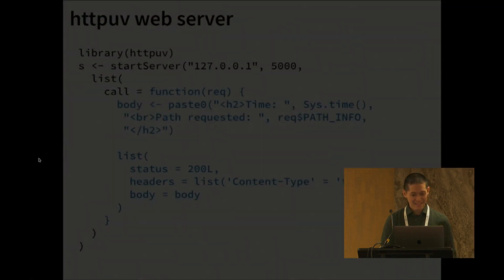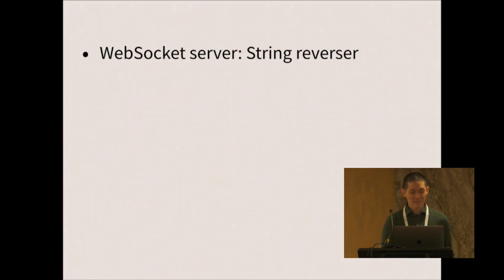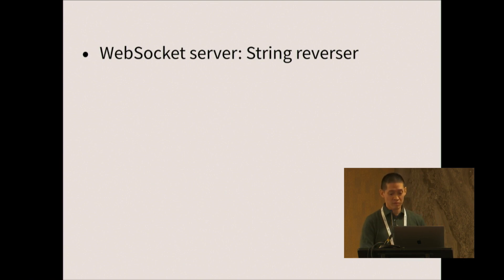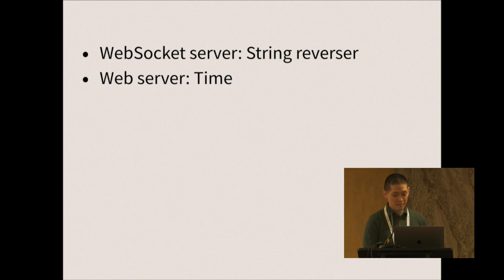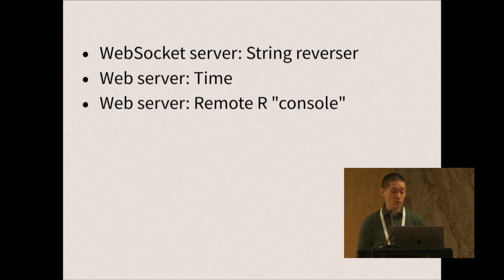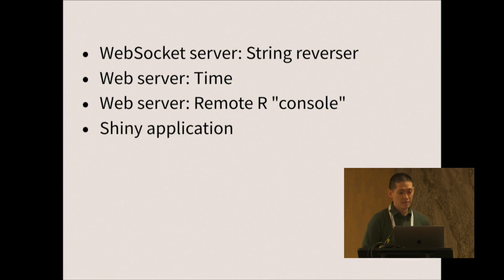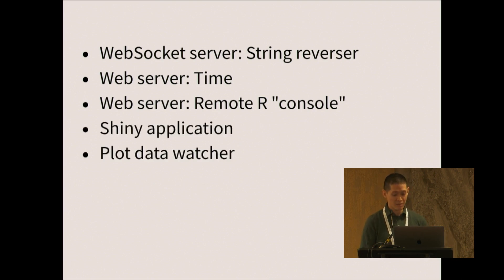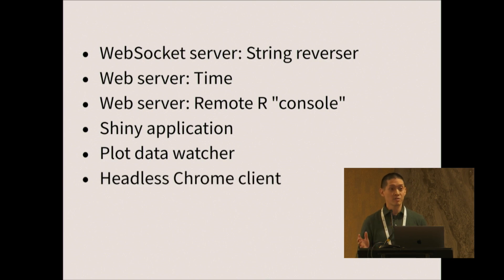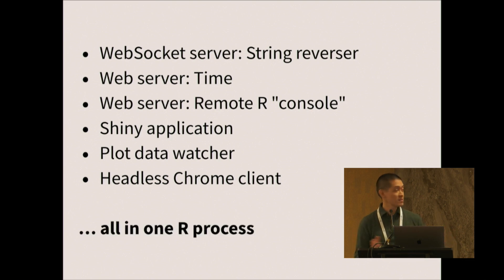So that's a taste of some of the things that are possible. We saw a WebSocket server that reverses strings, a web server that shows you the time, a web server with a remote R console you can use while running a Shiny application, a running Shiny app, a plot data watcher, and a headless Chrome client. All of these used Later — that's what makes it possible for them to run concurrently, and this is all in one R process.